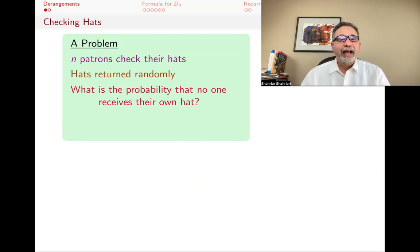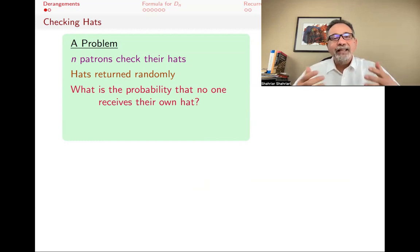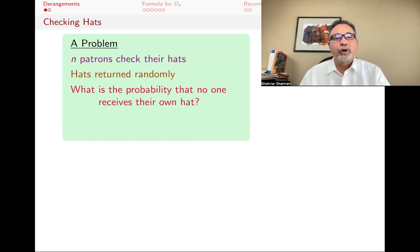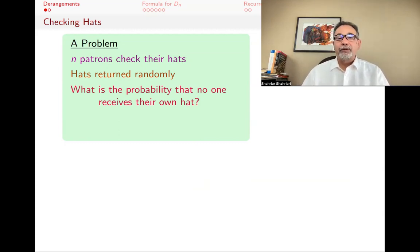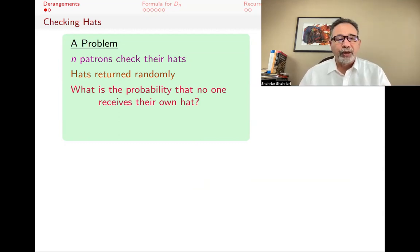You can think of this as a different kind of problem. You could say you're sending N emails to N people, but you randomly shuffle who gets what. And so the question is: what's the probability that no one gets the email that was supposed to go to them?